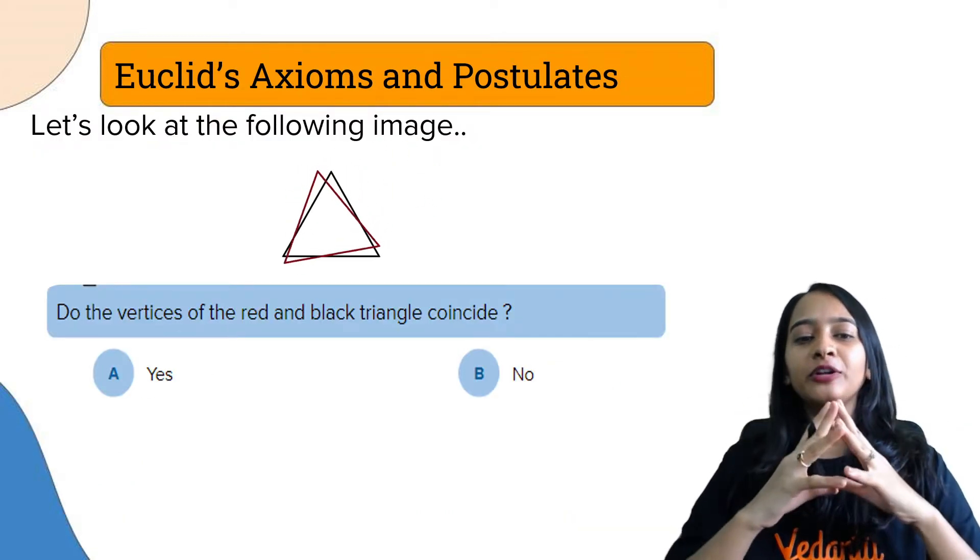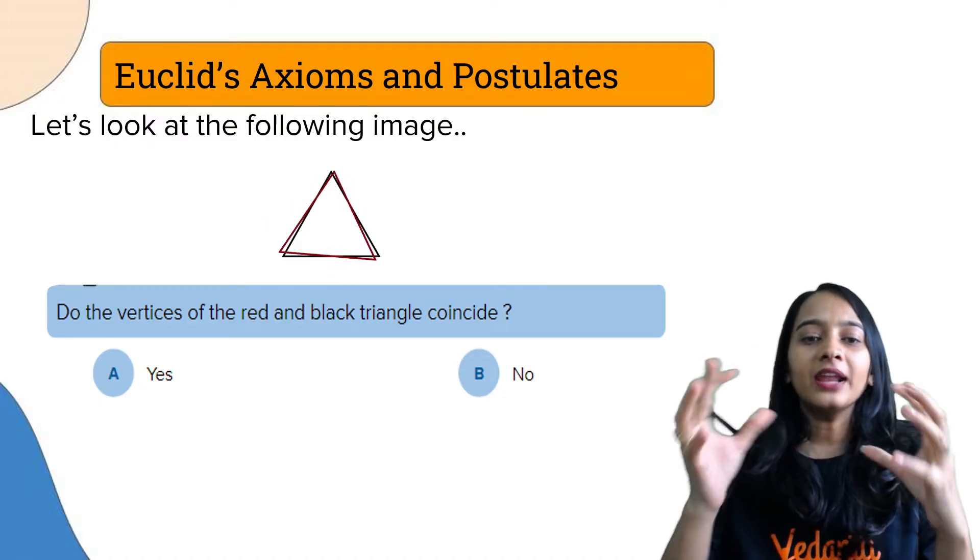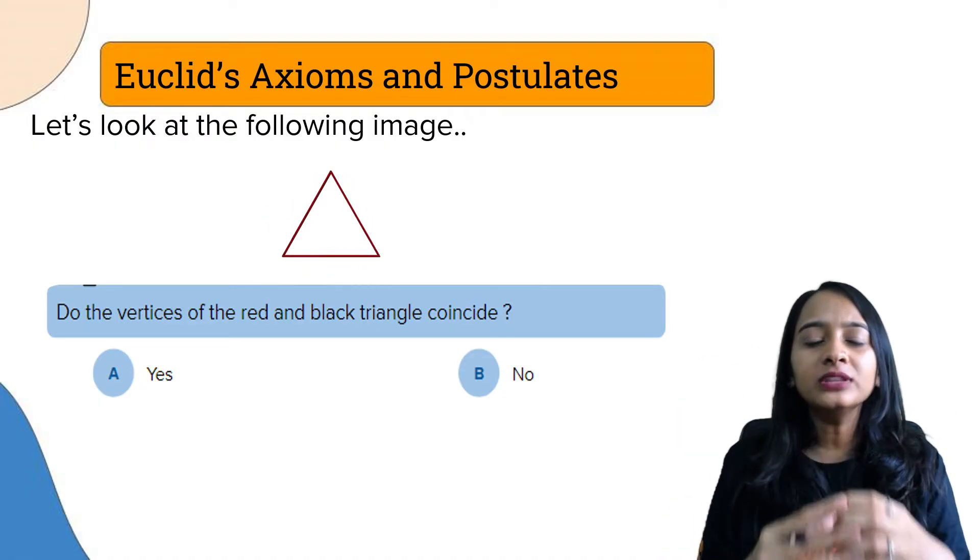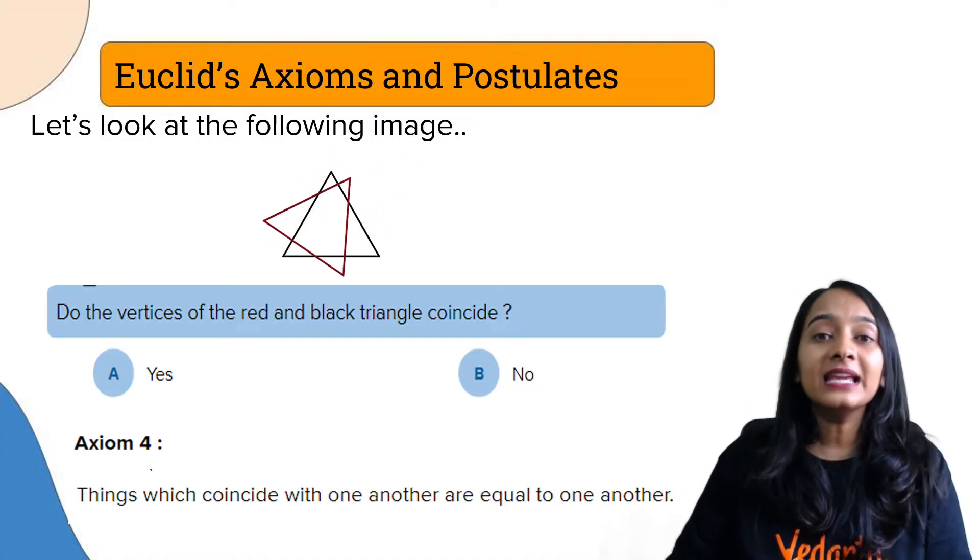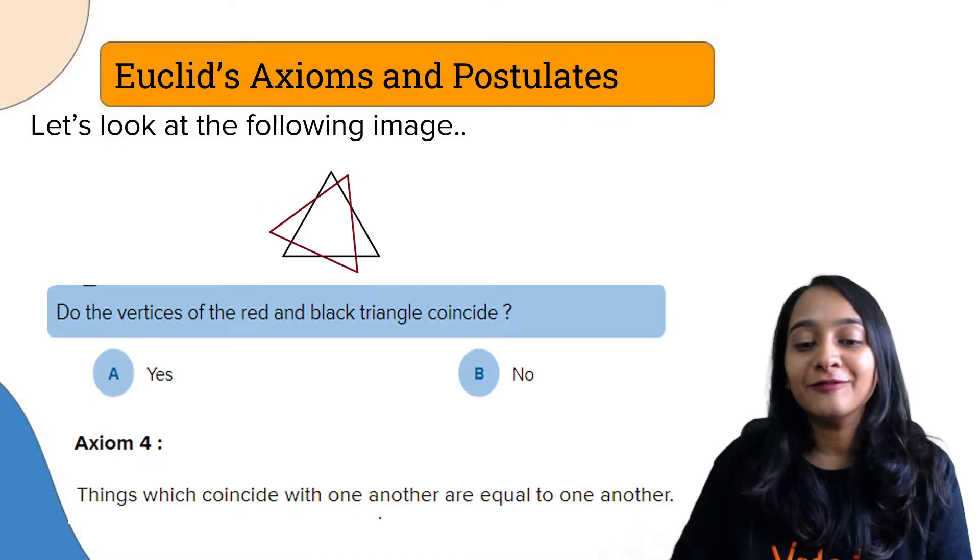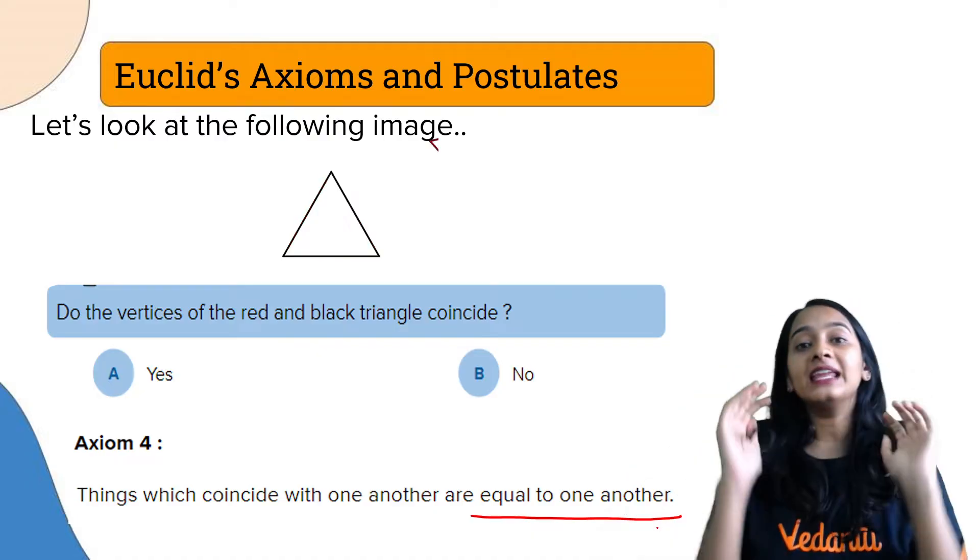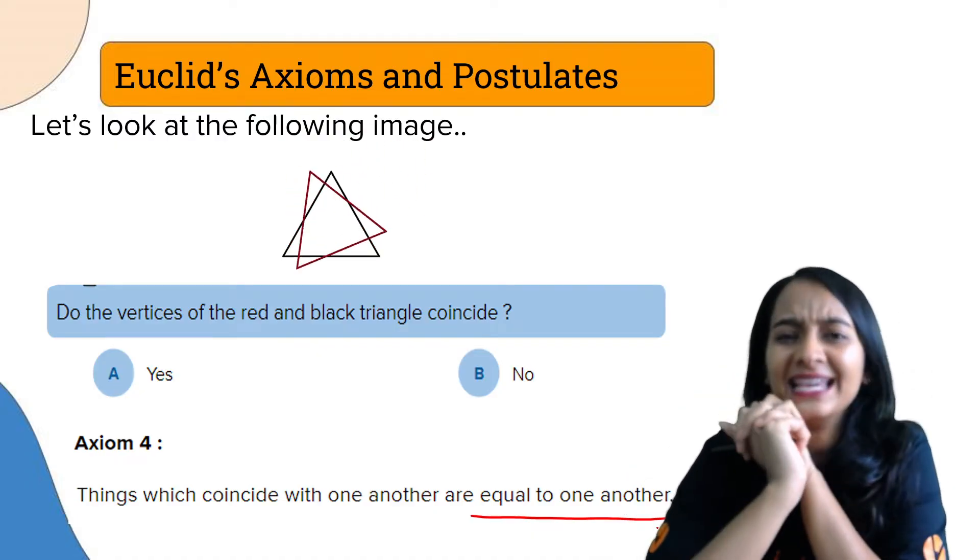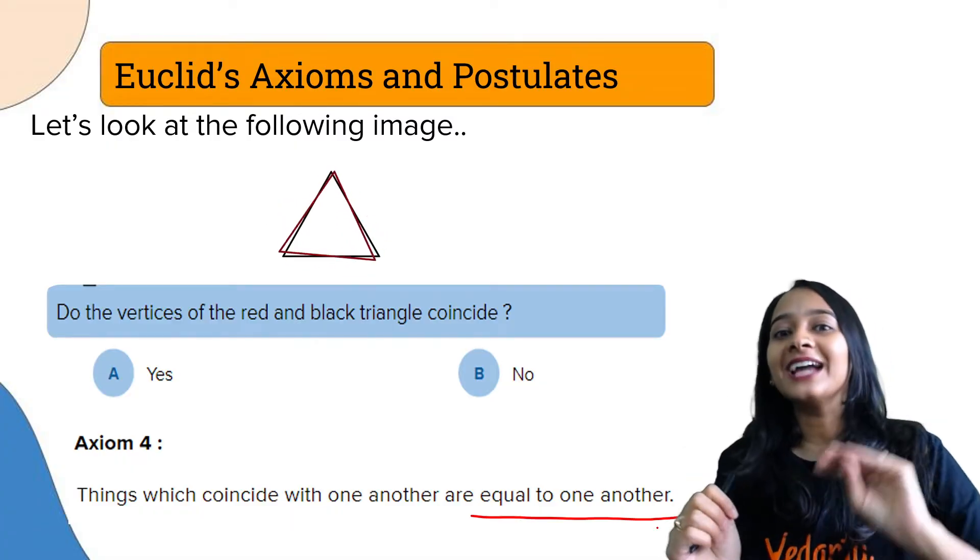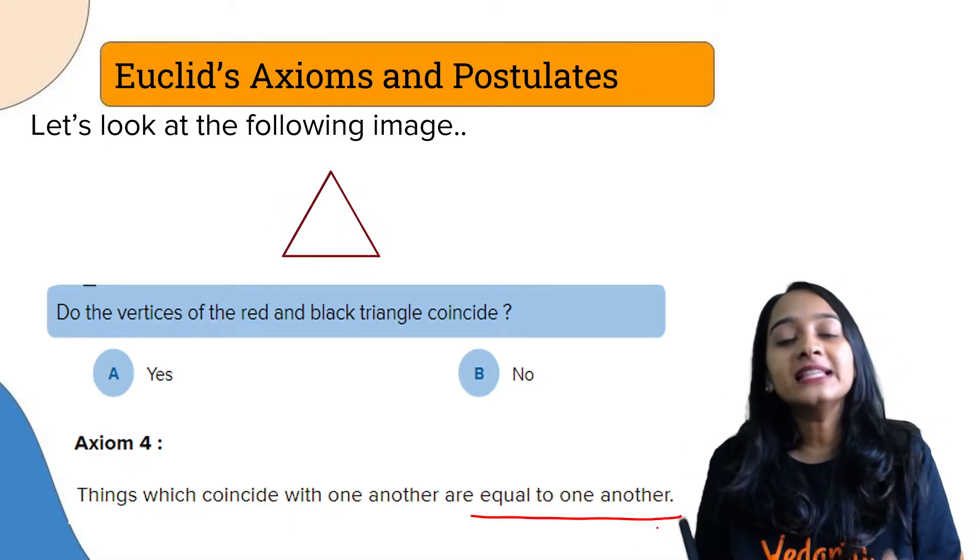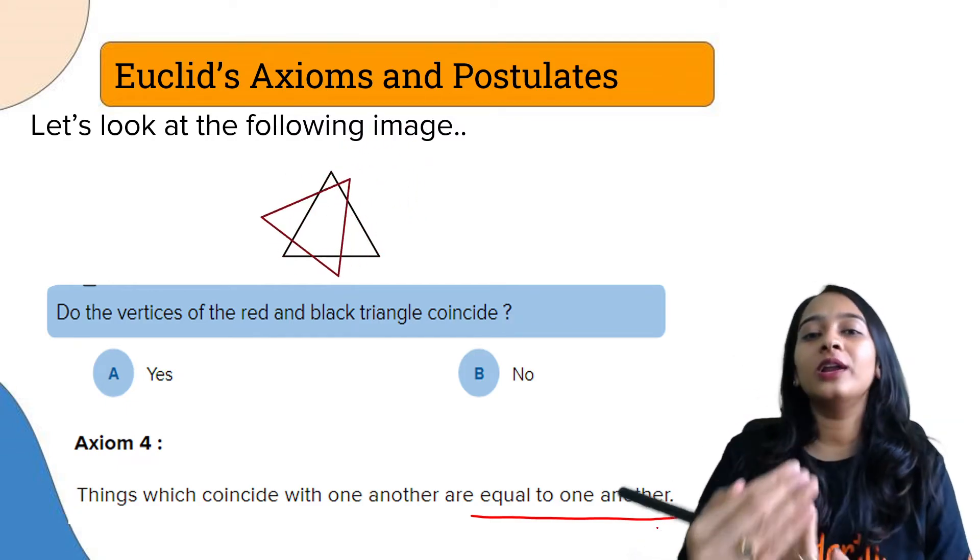Next, here are two triangles - one red triangle and one black triangle. If we fit them together, do you think the vertices will coincide? The answer is yes. Things which coincide with one another are equal to one another. If we calculate the area, it will be the same, so they are congruent. That is our Axiom number 4.